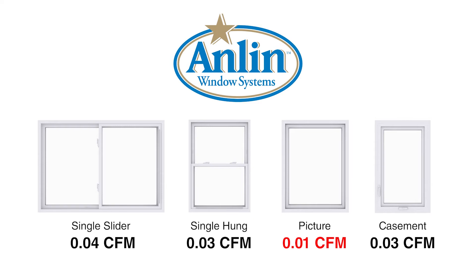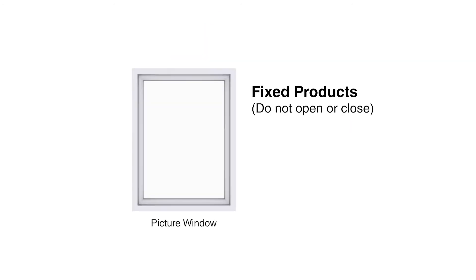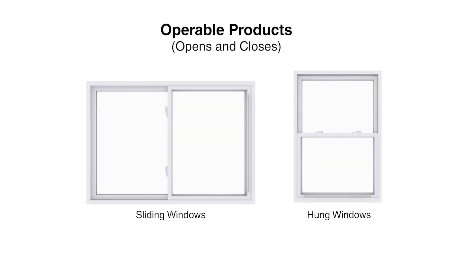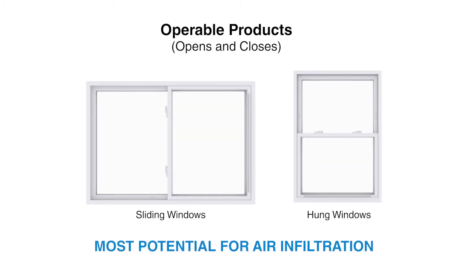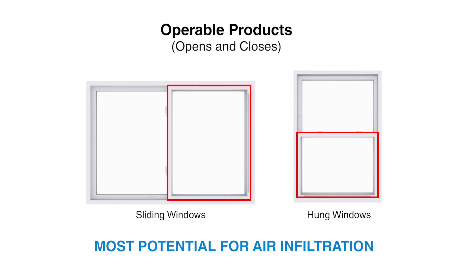Different products allow for different air infiltration rates. Fixed products — those that do not open or close, such as a picture window — are the most airtight. Those that do open, like sliding and hung windows, have the most potential for air infiltration because of the small gaps between the operable sash and frame when the window is closed.